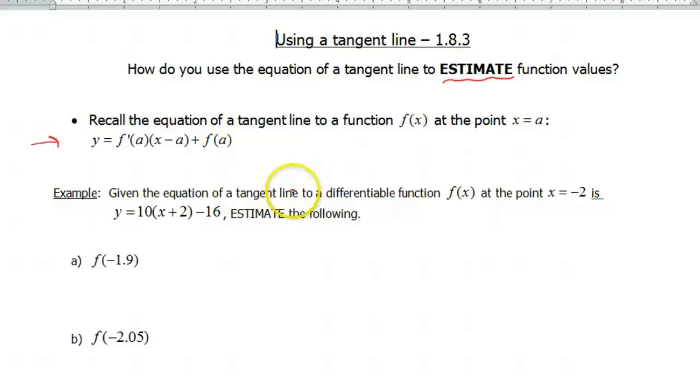So given the equation of a tangent line to a differentiable function f(x) at the point x = -2 is y = 10(x + 2) - 16, which if you watched the last video, should look familiar.